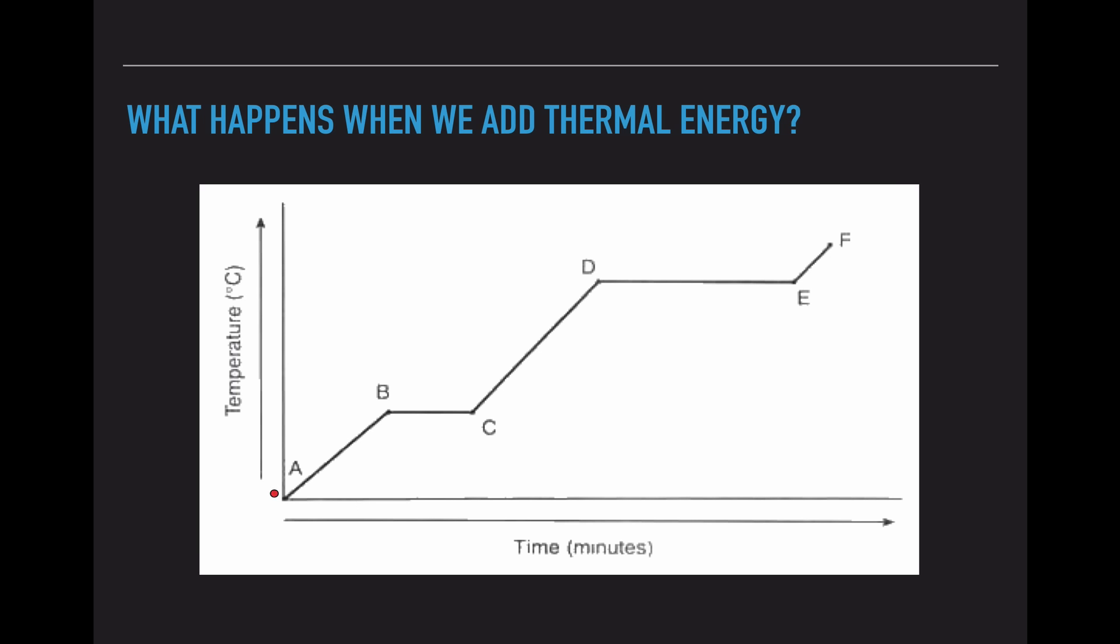This first diagonal line is where we have solid in the container only. When we started our lab, we had solid and liquid mixed together. We increase temperature in this first section when it's solid only because we're increasing the motion of those particles. Those solid particles move left to right very slowly, and as we add heat, they move faster and faster.